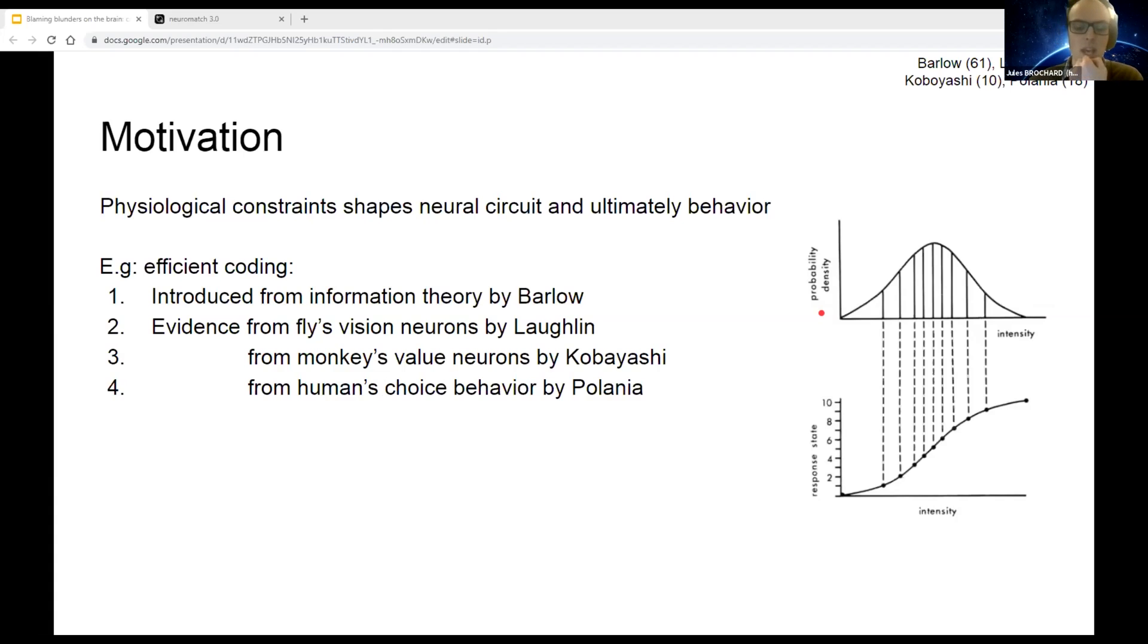Evidence for this theory has been found in the fly's vision neurons by Laughlin, in monkey's value neurons by Kobayashi, and more recently in the bias of human decision by Polanía.